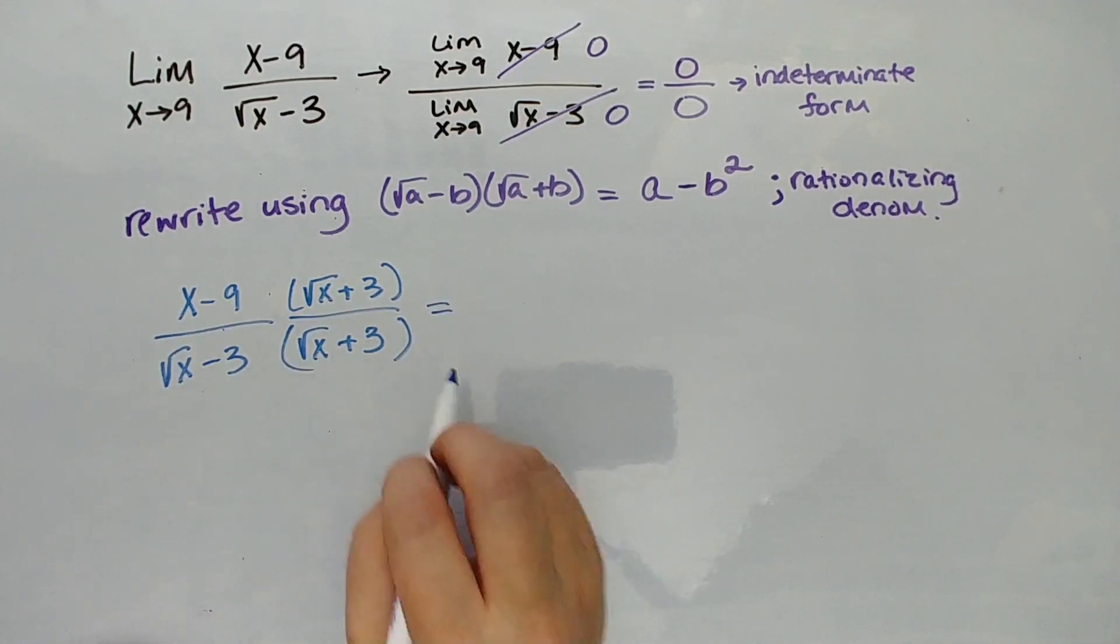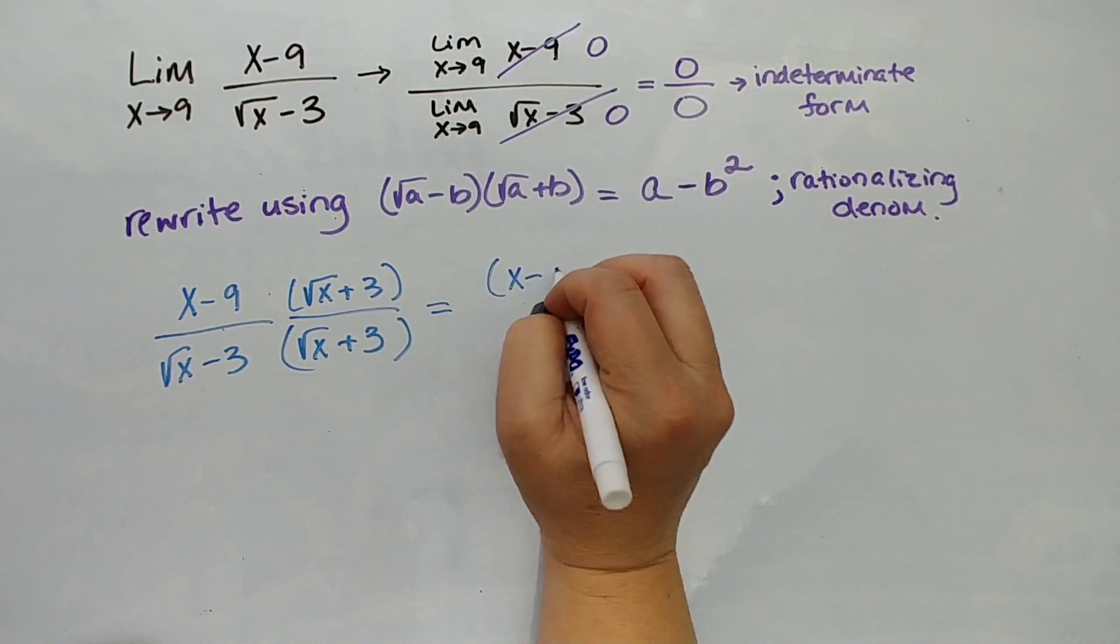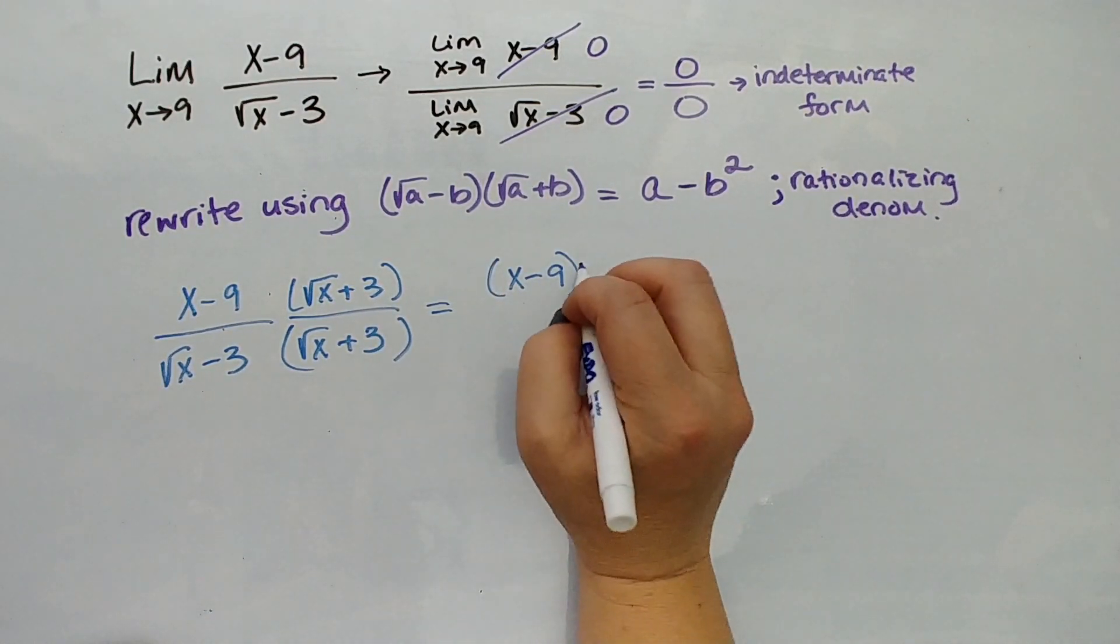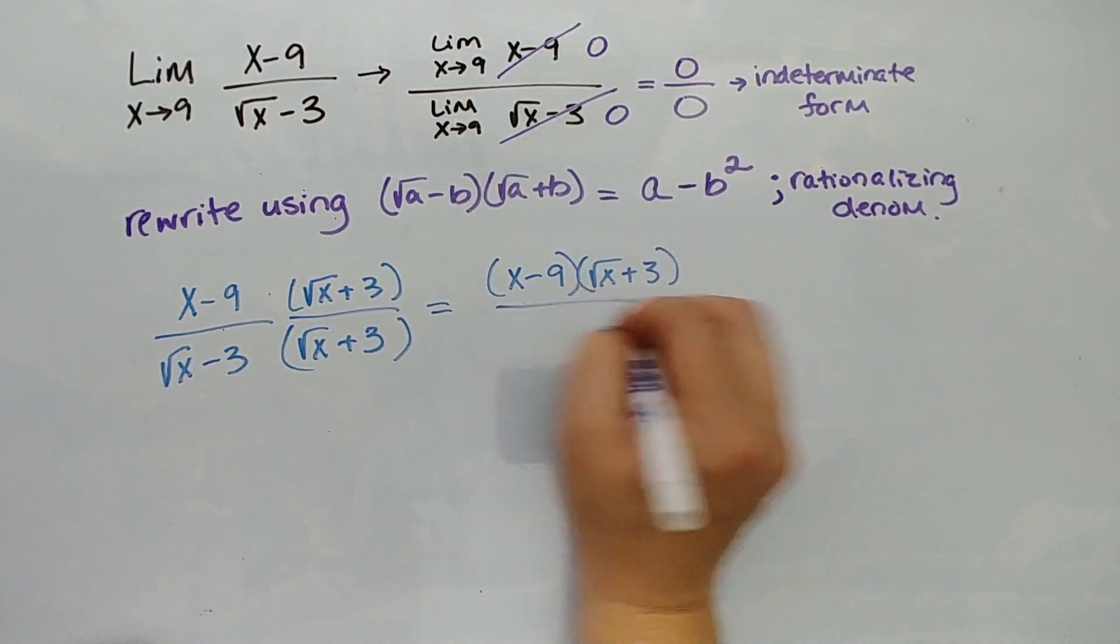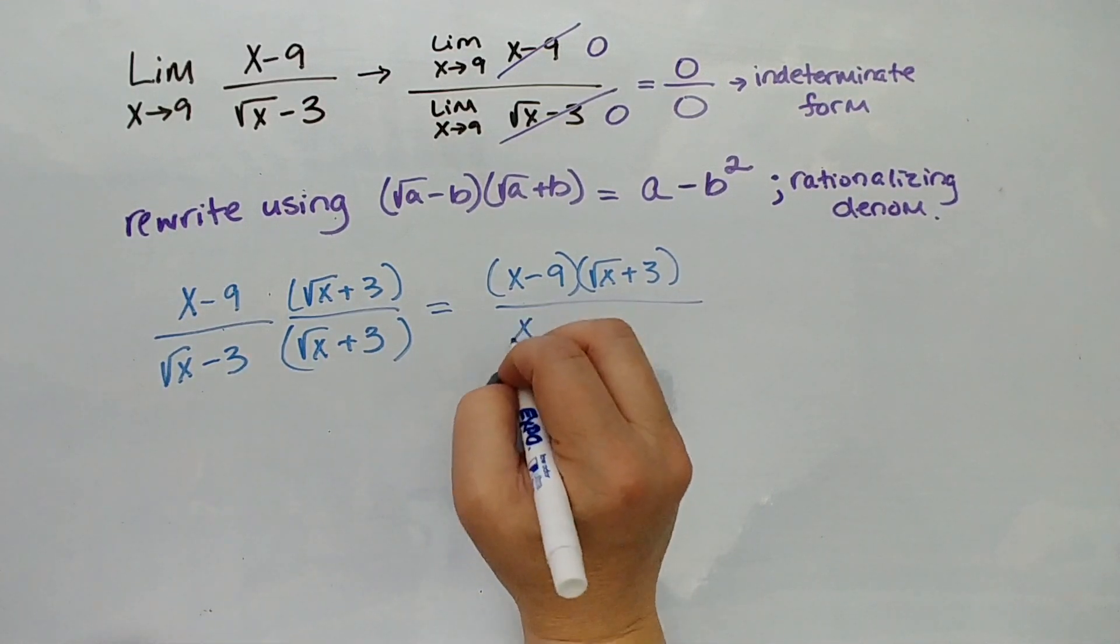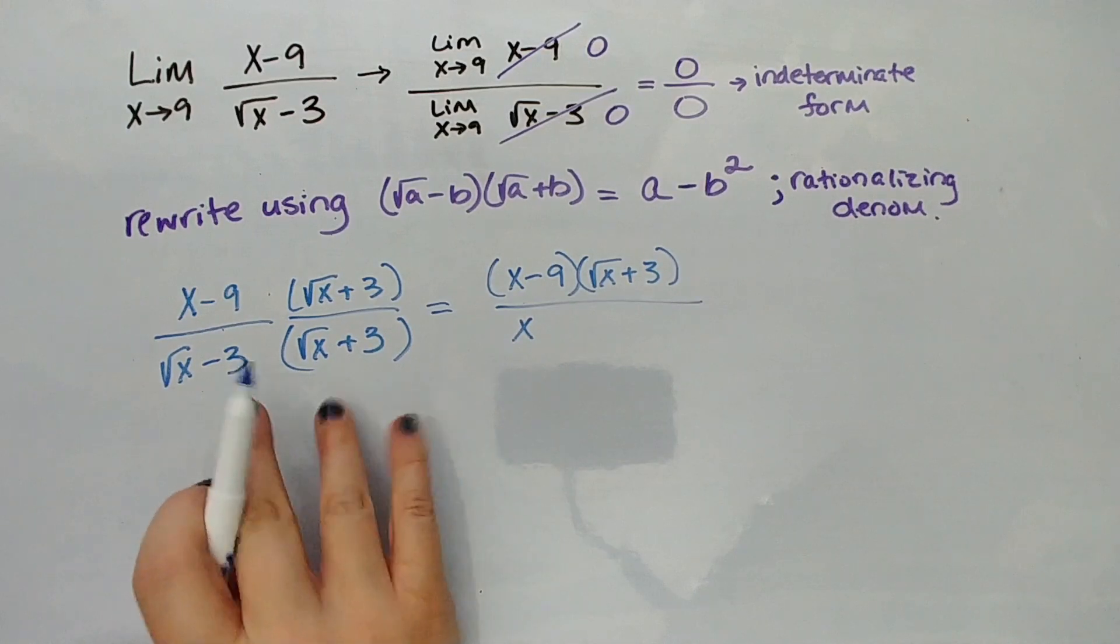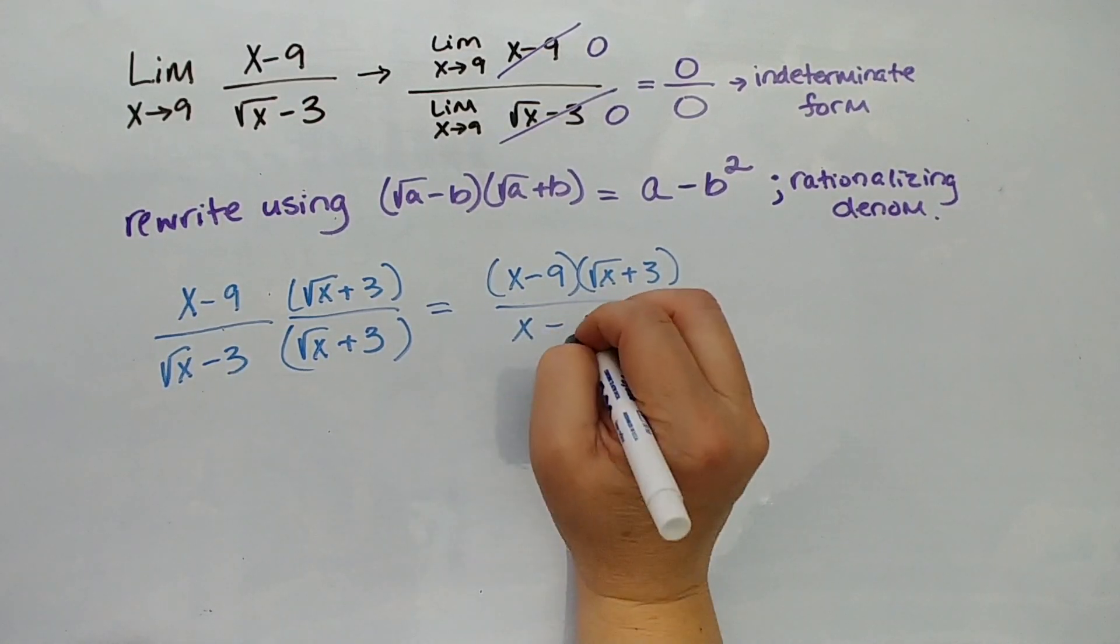We're going to multiply, and the good news is you don't actually have to multiply out. Keep your factors separate. We get (x-9)(√x + 3) all over... √x times √x is x, positive 3√x, negative 3√x cancel out, and we get minus 3 squared, which is 9.